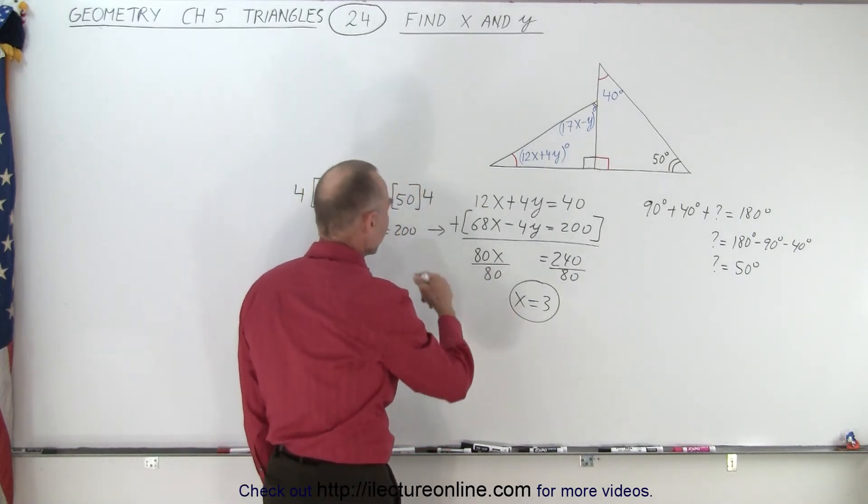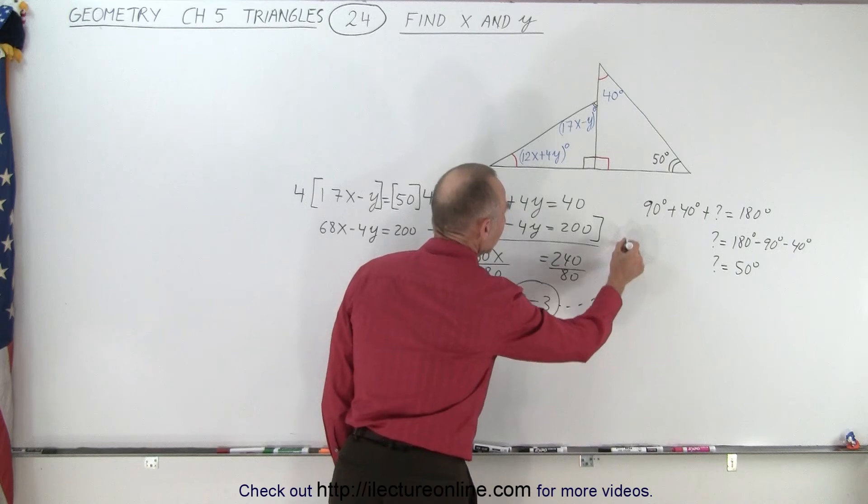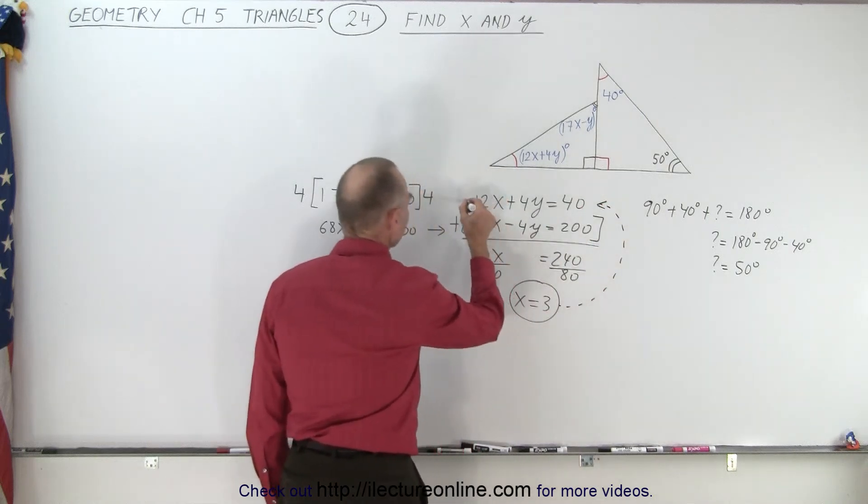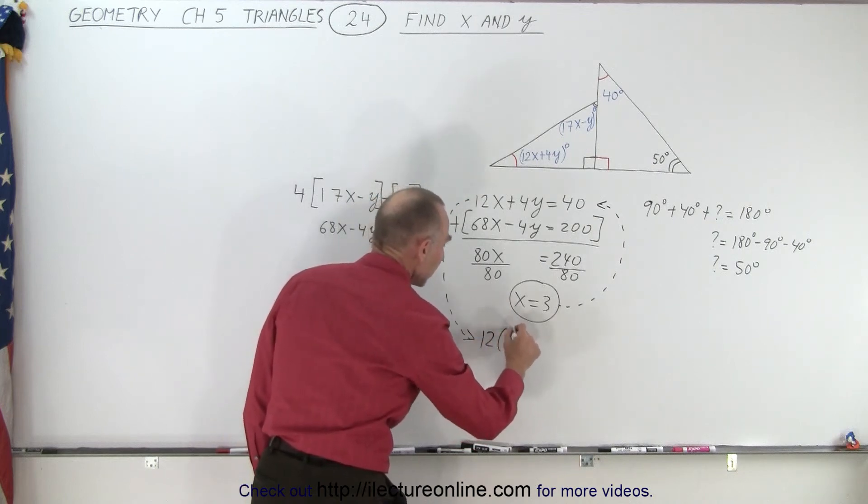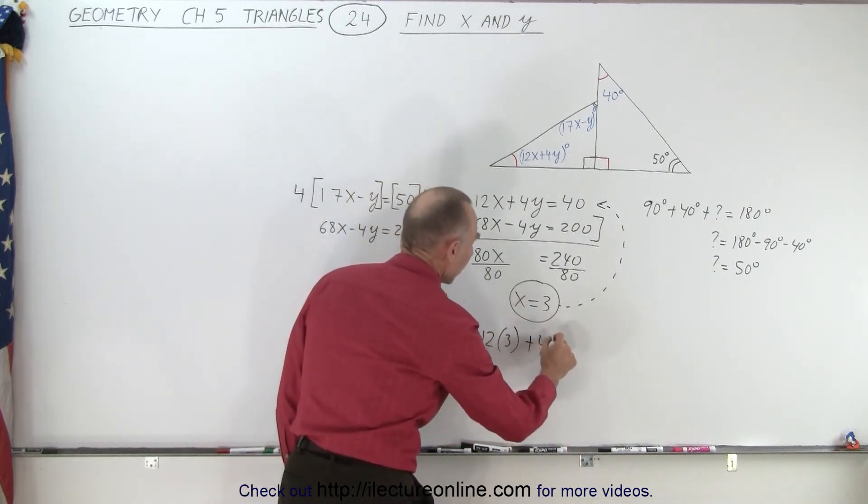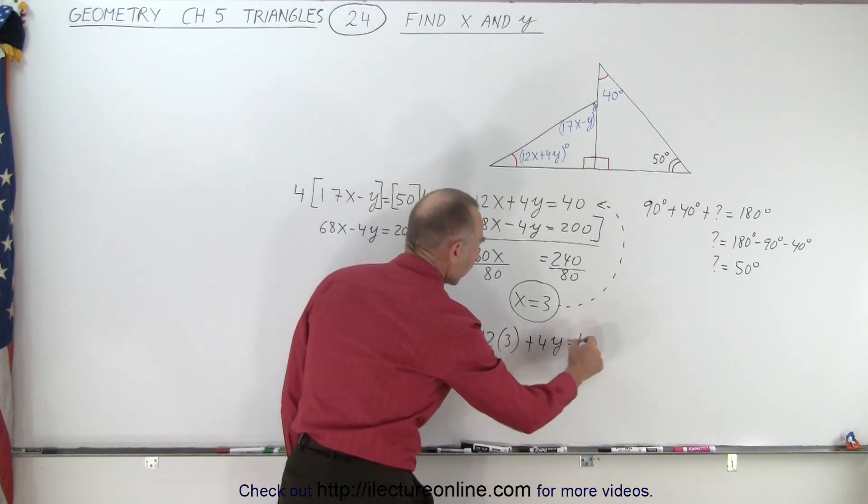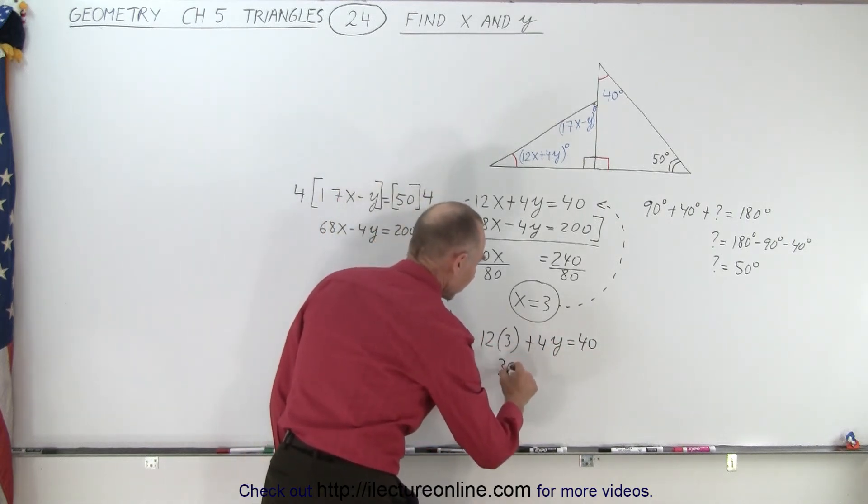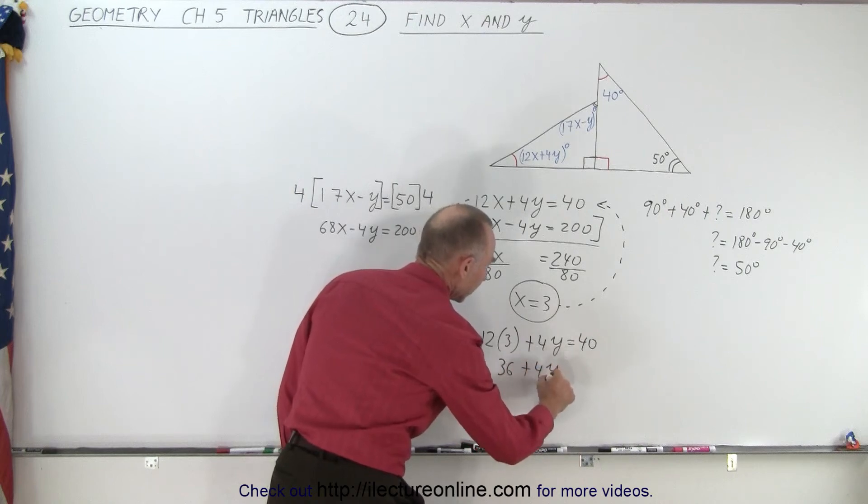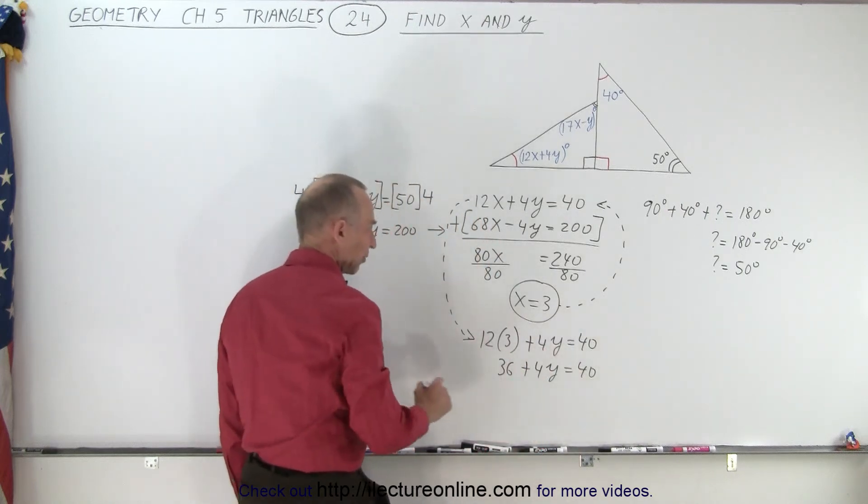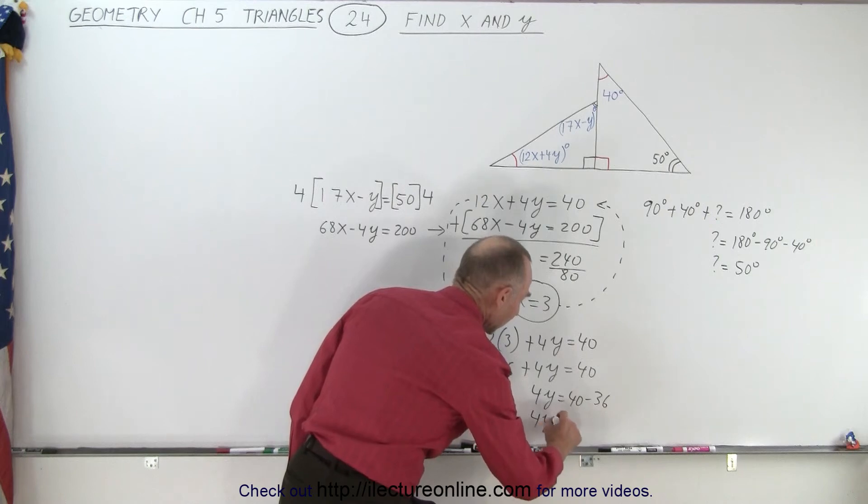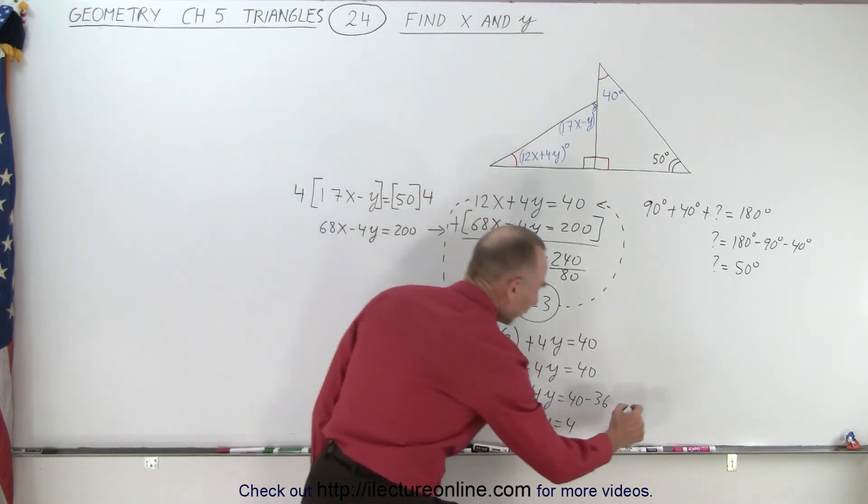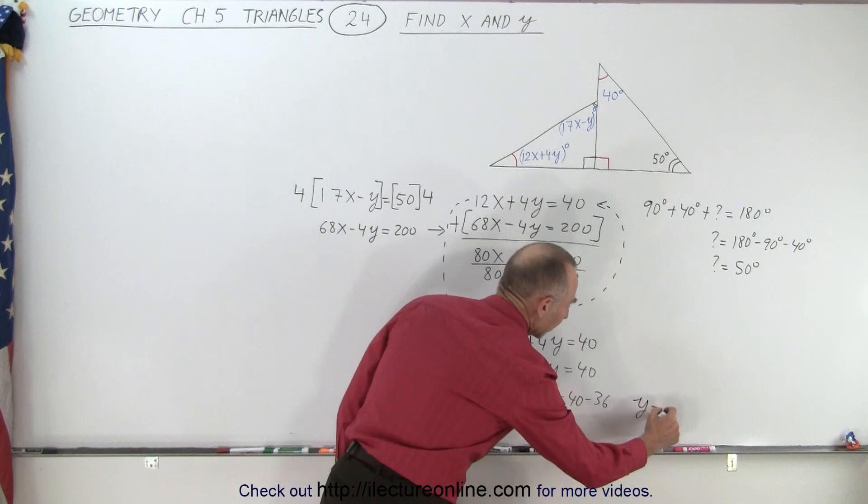It doesn't matter which one I plug it into. So I can go ahead and maybe plug it into this equation right here. So I'll take this equation and instead of writing 12x I'll write 12 times 3 plus 4y equals 40. 12 times 3 is 36, so 36 plus 4y is equal to 40. Now I can subtract 36 from both sides so I get 4y is equal to 40 minus 36, or 4y is equal to 4, and of course divide both sides by 4. I get y is equal to 1.